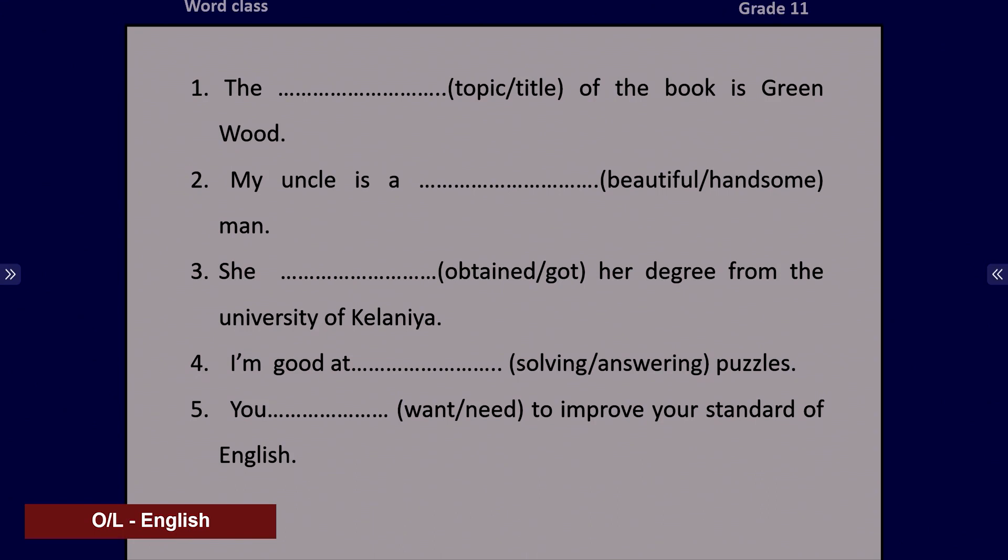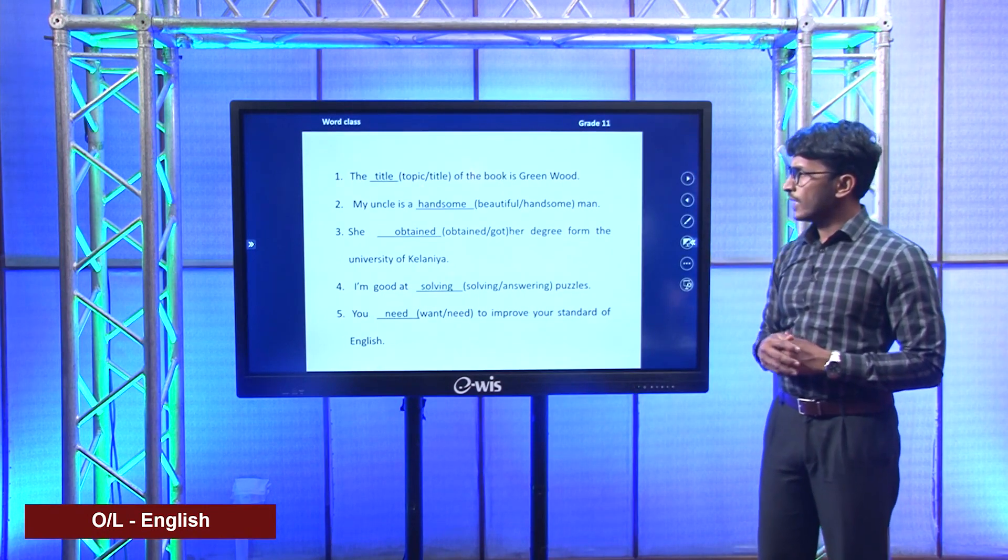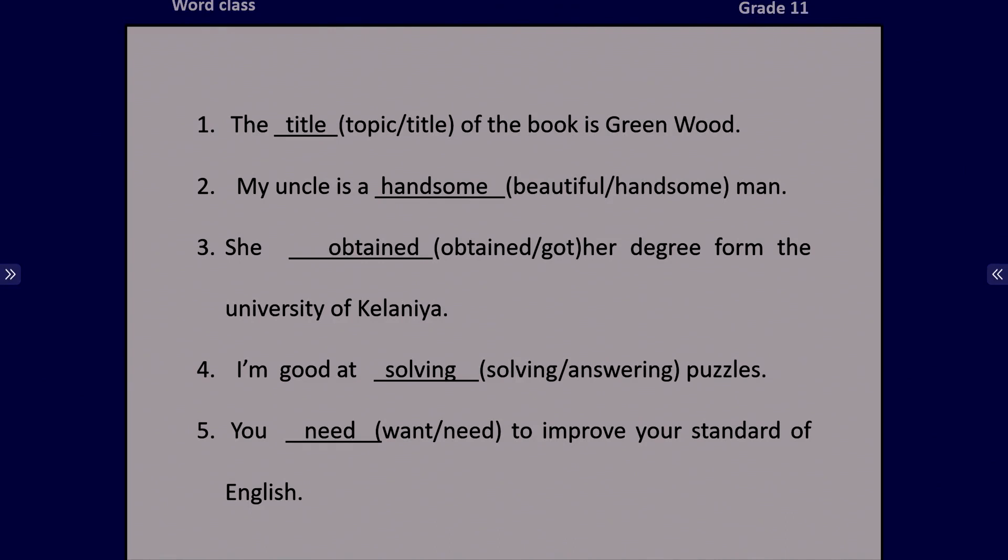Let's see your answers. The title of the book is Greenwood — title is the identifying name given to a book, play, or musical composition. My uncle is a handsome man — handsome goes with male; handsome man, handsome boy, but we don't say beautiful for males as beautiful and pretty go with female. She obtained her degree — when you get something you receive it, but when you obtain something you get it through effort. I'm good at solving puzzles — remember, we solve puzzles and problems, but we answer questions. For questions we have answers; for problems we have solutions. You need to improve your standard of English — need to implies you have to.